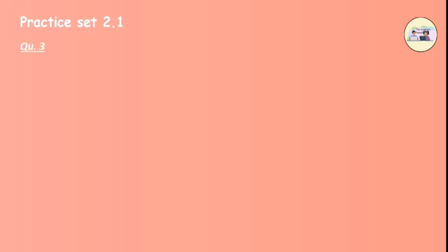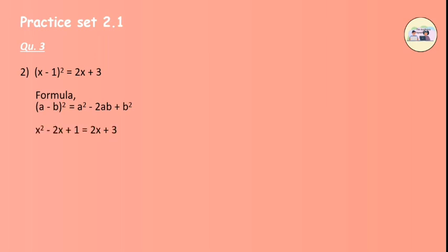Now let's go straight to Practice Set 2.1, Question 3: Write the following equations in the form ax squared plus bx plus c equals 0. We have the equation x minus 1, the whole square, equals 2x plus 3. Applying the formula (a minus b) squared equals a squared minus 2ab plus b squared, we get x squared minus 2x plus 1 equals 2x plus 3. On further solving, we get the final equation as x squared minus 4x minus 2 equals 0.